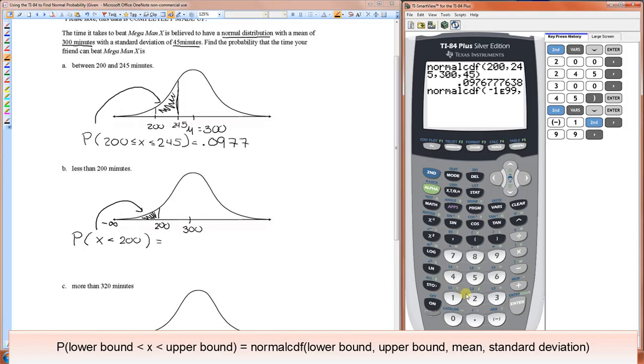So you put 200 for the next one. That's the upper bound. And then 300 is the mean, and 45 is the standard deviation.